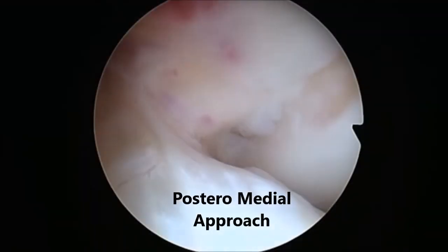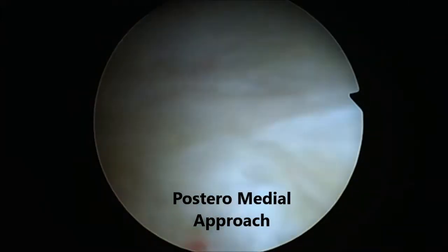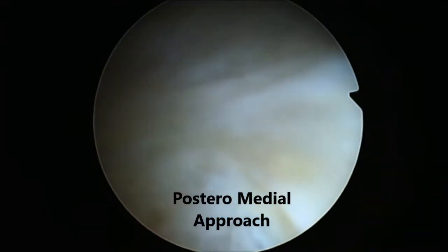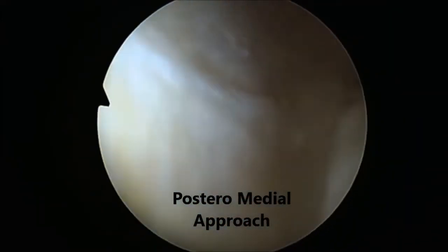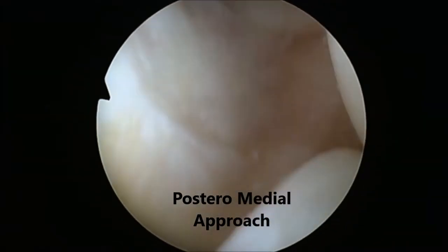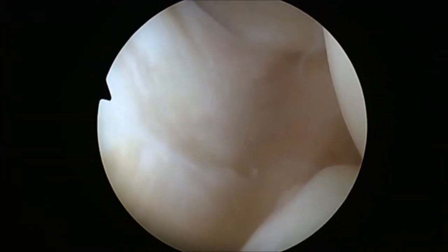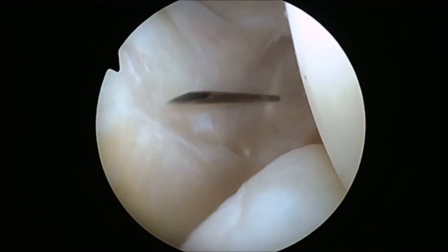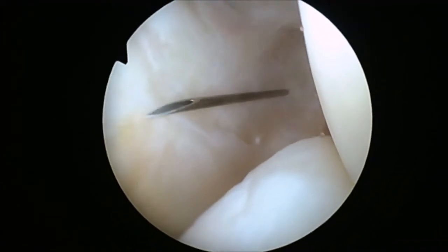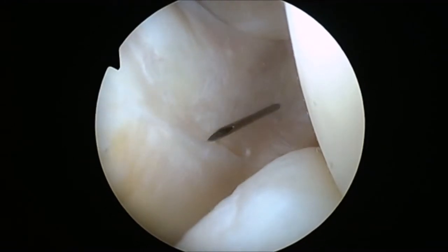For the posteromedial approach, the camera should be pushed trans-notched to the posterior compartment. Using transillumination, a needle is introduced in the posteromedial aspect of the knee, followed by a number 11 scalpel creating the portal. A cannula is not necessary.